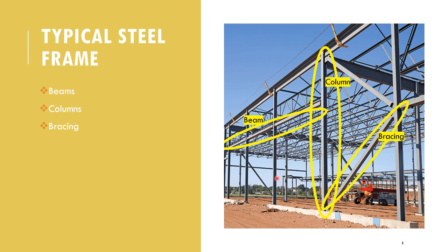The major components making up the steel frame are highlighted in yellow. The beam is your horizontal steel element. Your vertical steel elements are labeled as columns. Then we have diagonal elements that are usually placed on the outside face of the building — these are referred to as bracings. Bracings are important because they resist horizontal forces, i.e., wind loads and earthquake loads imposed on the building. These three components basically comprise a typical steel frame.